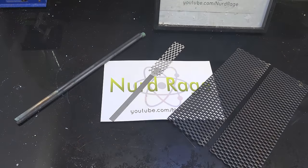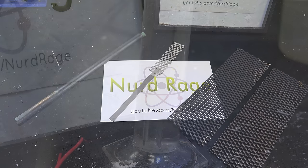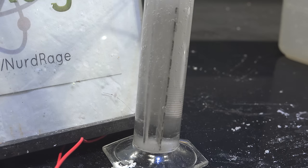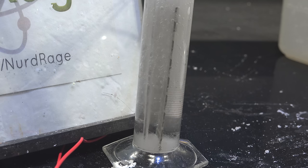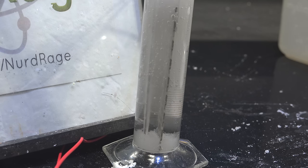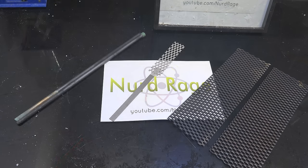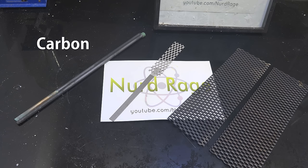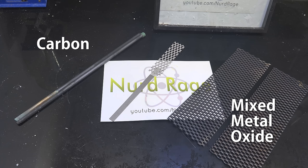Now before we start building, I need to go over the most important part of the potassium chlorate electrolysis cell, the anodes. These electrodes are where the oxidation is occurring and are notorious for getting destroyed in the highly corrosive conditions of a potassium chlorate cell. So you need anodes that resist corrosion. The three most common ones used by both amateurs and professionals are carbon, mixed metal oxide and platinum.